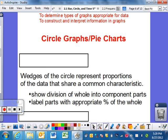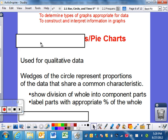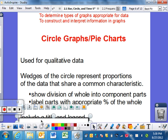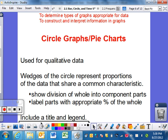Circle graphs, or pie charts. You've seen these before. It's used for qualitative data only. Wedges of the circle represents proportions, i.e., percentages of the data that share common characteristics.